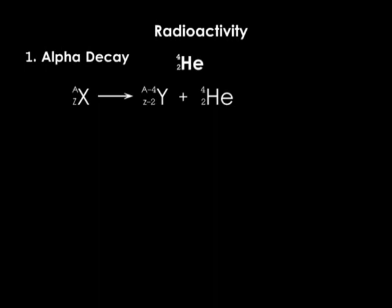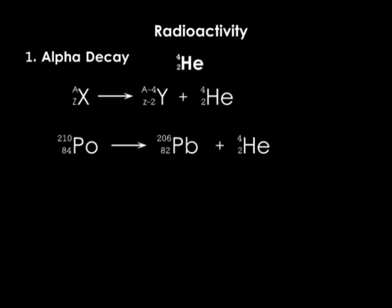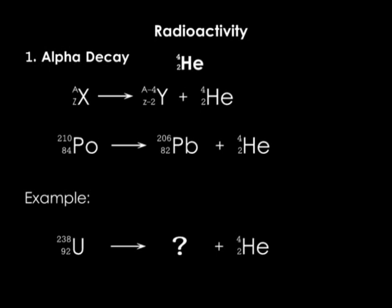Notice that the daughter nuclide is completely different from the parent. To identify the daughter nuclide, we simply check the new atomic number from the periodic table. For example, polonium undergoes alpha decay to form lead, as shown here. For example, if uranium-238 undergoes a single alpha decay, what element will be formed? In the solution, we write the equation: uranium-238 undergoes alpha decay. The mass number reduces by 4 to give 234, and the atomic number reduces by 2 to give 90. From the periodic table, atomic number 90 is thorium.